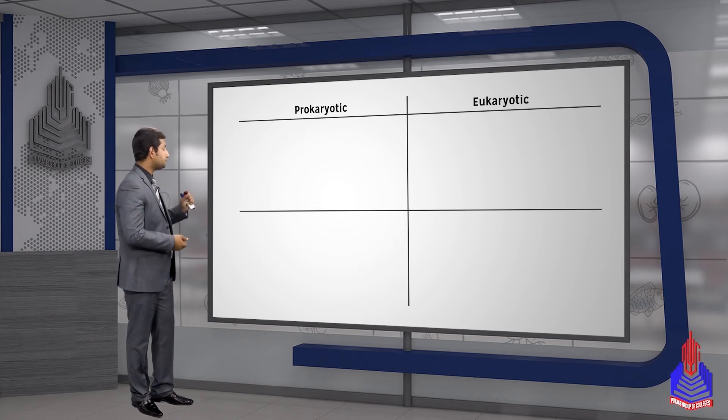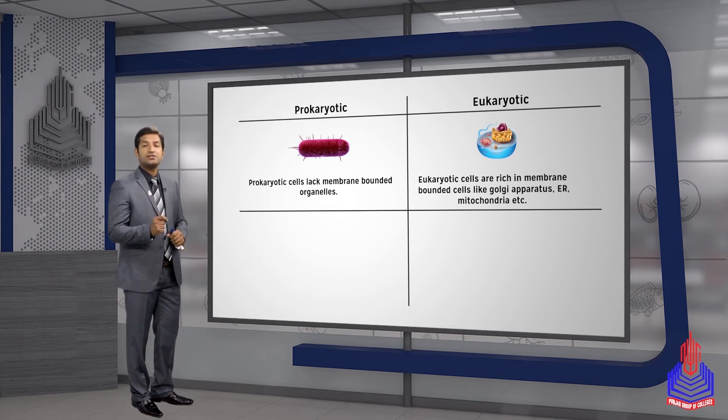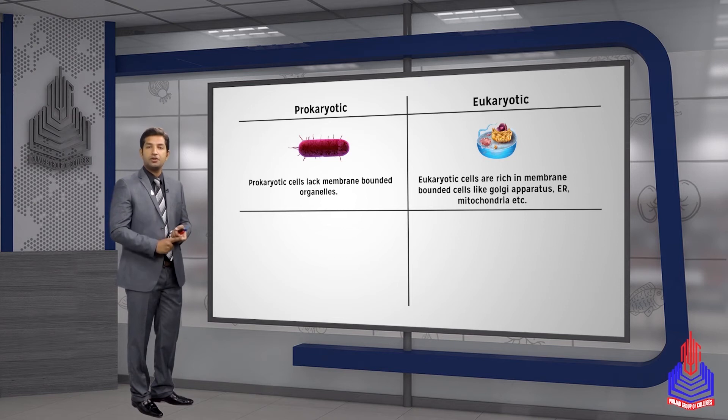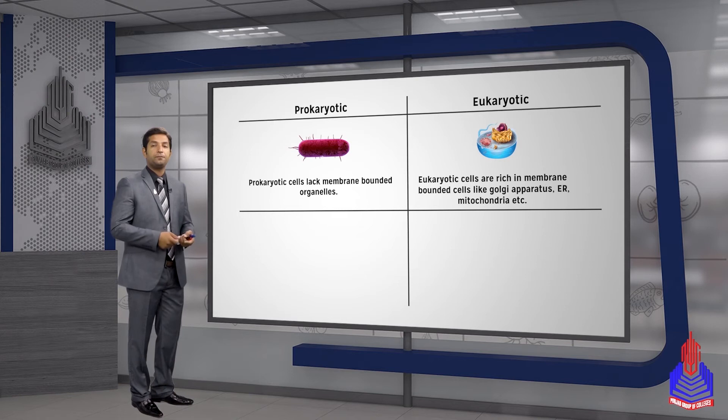Next point about cellular organization: it is about membrane-bounded organelles. The eukaryotic cell is more complex and advanced. It contains a lot of organelles that are membrane-bounded, for example endoplasmic reticulum, golgi bodies, mitochondria, chloroplast, vacuoles, etc. While on the other hand, in the prokaryotes - bacteria - there are no membrane-bounded organelles.